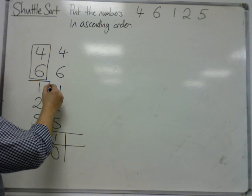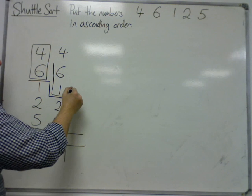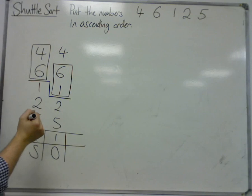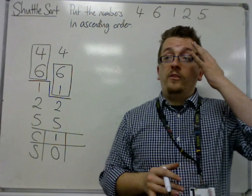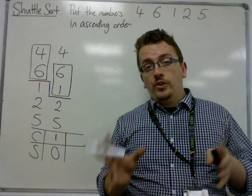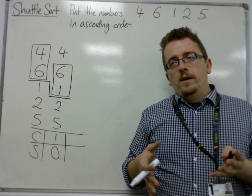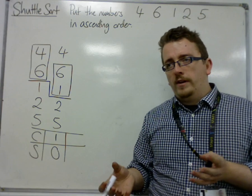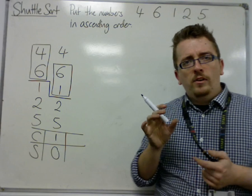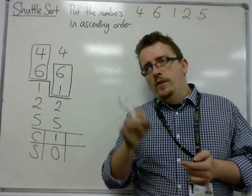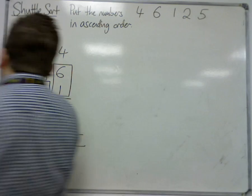We then go down one level and now compare the six and the one. Now we know that the six and the one will have to be swapped. Shuttle sort enables us to say, well, if the one has to be swapped with the six, then we might as well check that the one is in the correct place.